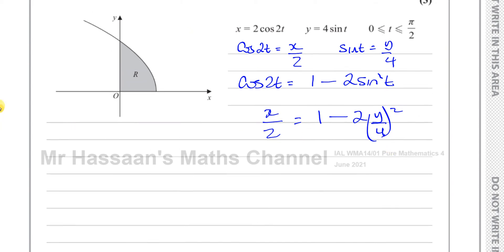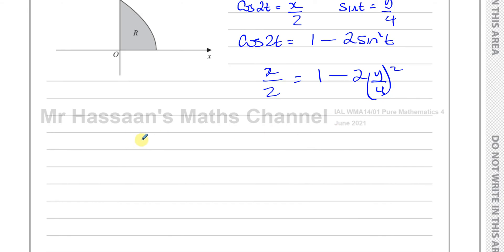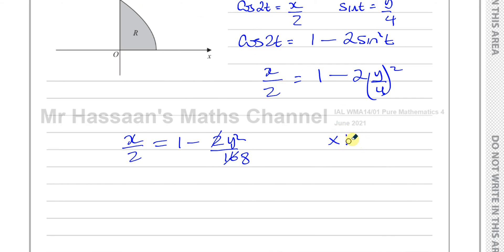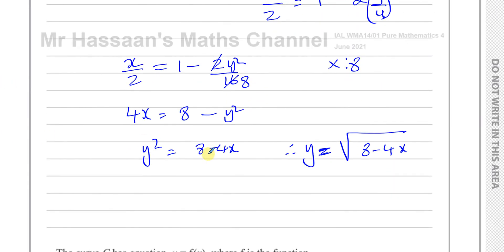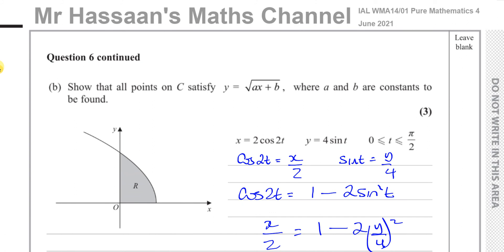Rearranging: x over 2 equals 1 minus 2 times y squared over 16, which simplifies to 1 minus y squared over 8. Multiplying both sides by 8 gives 4x equals 8 minus y squared. Making y squared the subject: y squared equals 8 minus 4x. Therefore y equals the square root of (8 minus 4x). So a equals minus 4 and b equals 8.